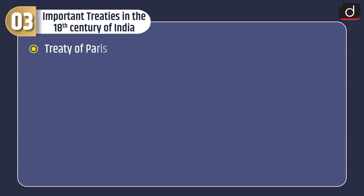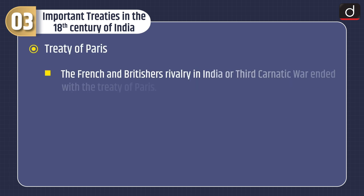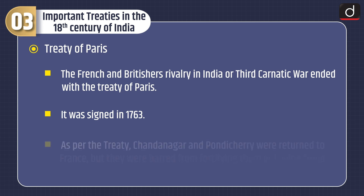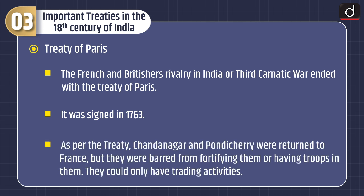Treaty of Paris. The French and British rivalry in India, or the Third Carnatic War, ended with the Treaty of Paris. It was signed in 1763. As per the treaty, Chandannagar and Pondicherry were returned to France, but they were barred from fortifying them or having troops in them. They could only have trading activities.